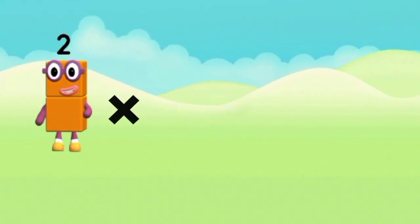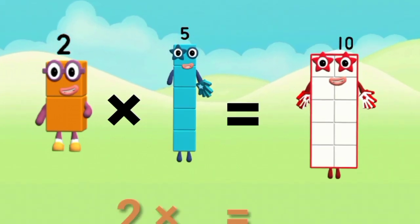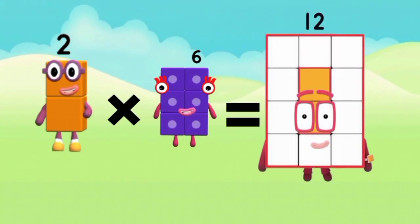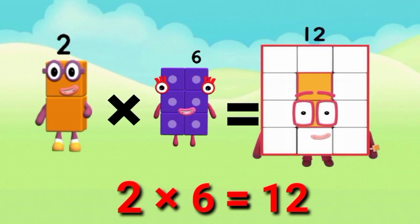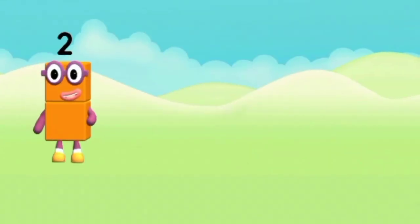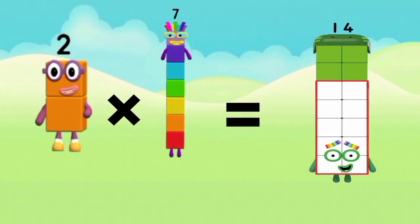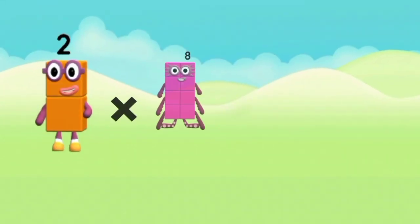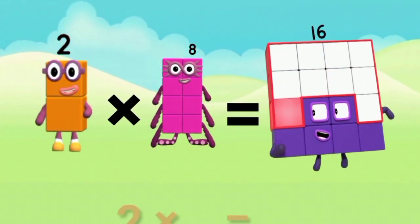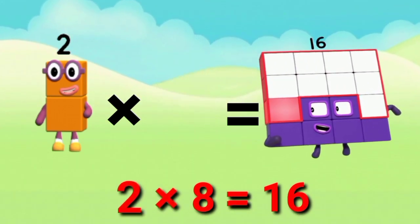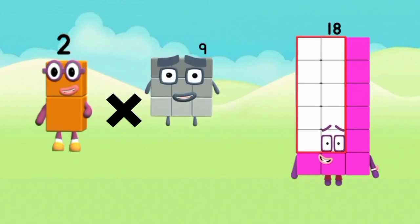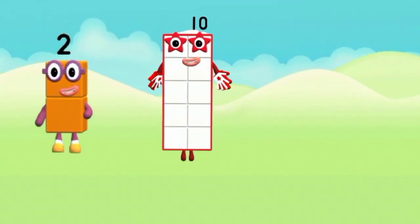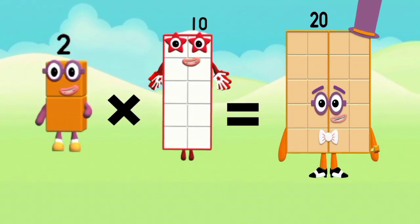Two fives are ten. Two sixes are twelve. Two sevens are fourteen. Two eights are sixteen. Two nines are eighteen. Two tens are twenty.